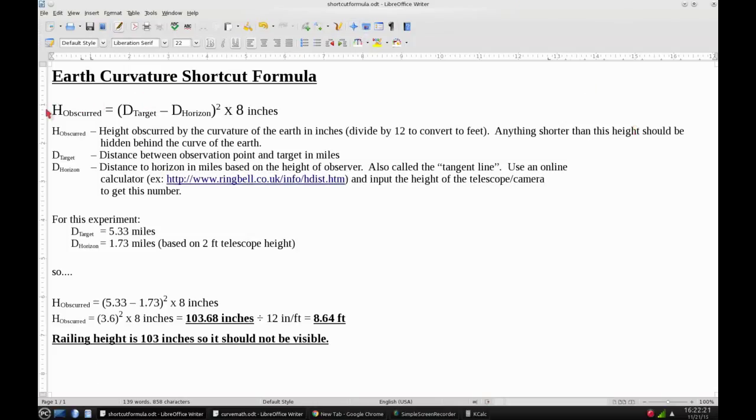Right here is the shortcut formula. The height obscured equals distance to target minus distance to horizon squared times 8 inches. If you've watched other flat earth videos you've probably seen this equation but without the distance to horizon part of it.